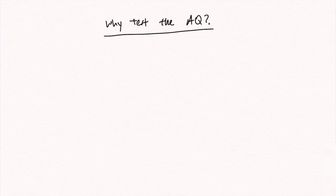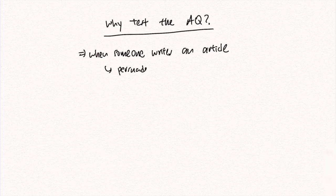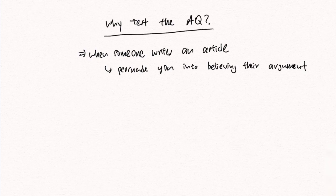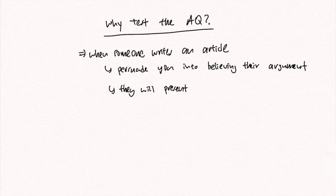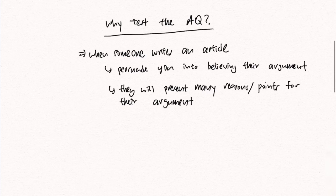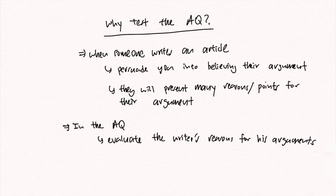The AQ is not as scary as it might appear to be. In fact, its purpose is something that we should appreciate. So why do they test us the Application Question? The first thing we need to understand is why someone would write an article. When anyone writes an article, their purpose is to persuade you to buy into his or her arguments. Essentially, what we are doing in the AQ is evaluating the writer's reasons for his arguments, and whether we agree with them.